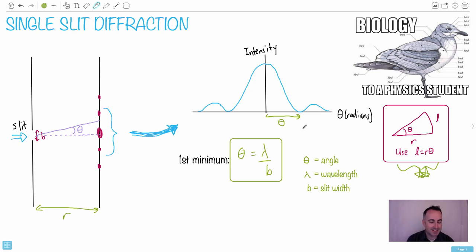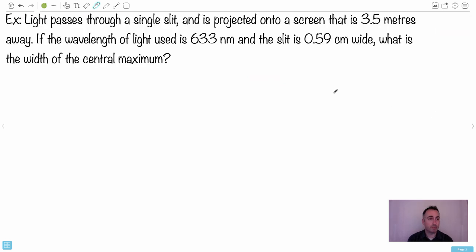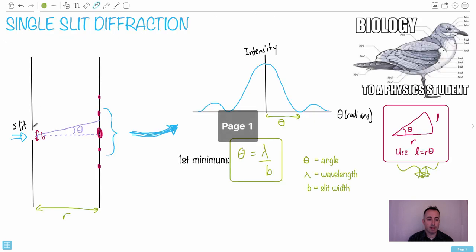So let's do a real example just to make sure it makes more sense to you. We have light and it passes through a single slit. It's projected onto a screen that is 3.5 meters away. So that means we have this distance here is 3.5 meters. Now the wavelength of light used is 633 nanometers. That's lambda - 633 nanometers means 10 to the minus 9 meters.